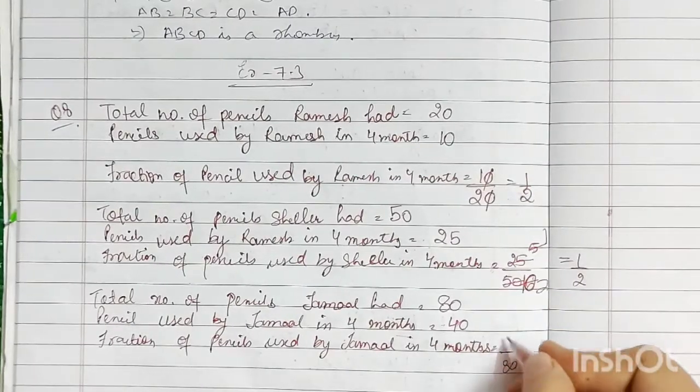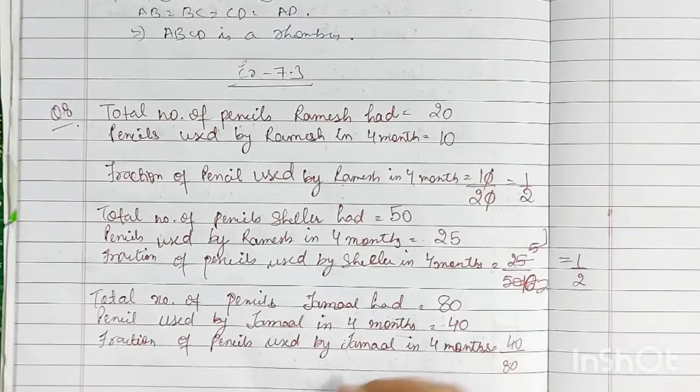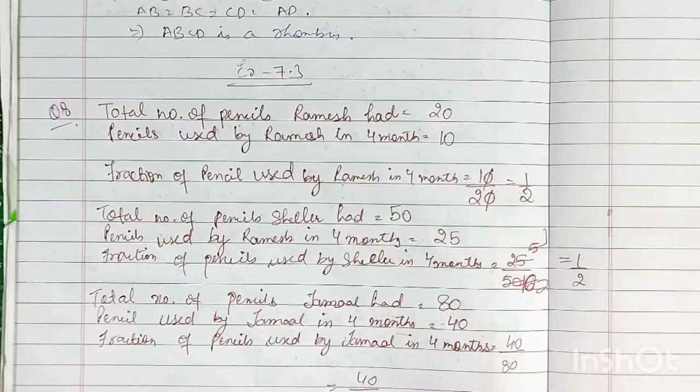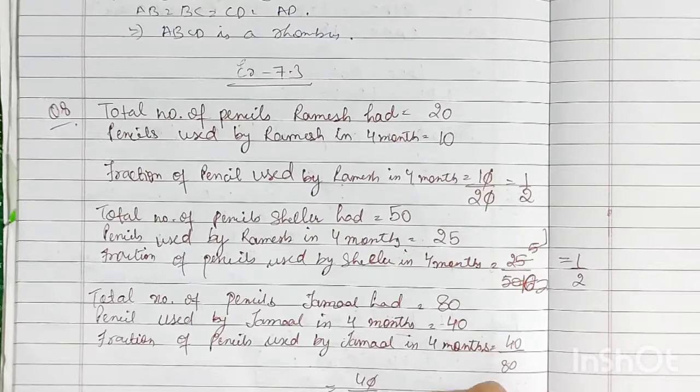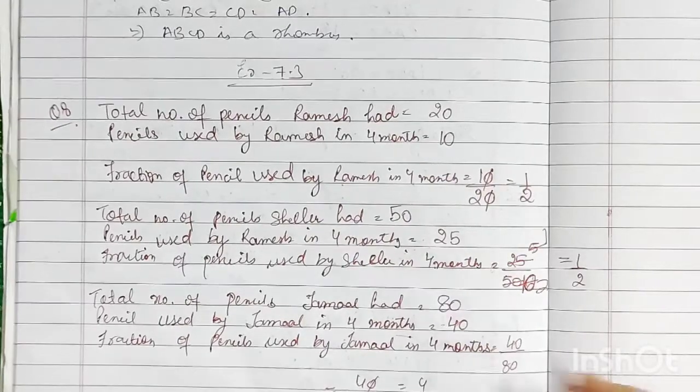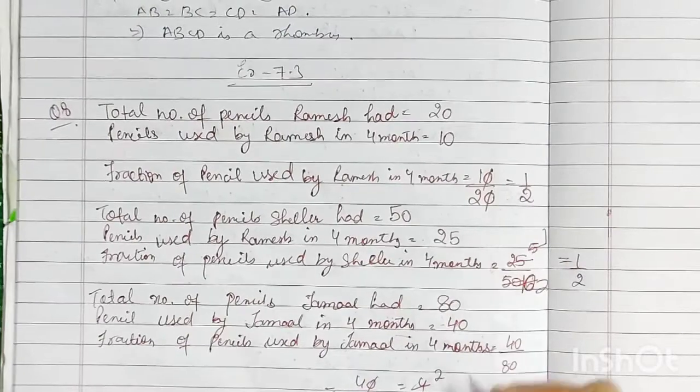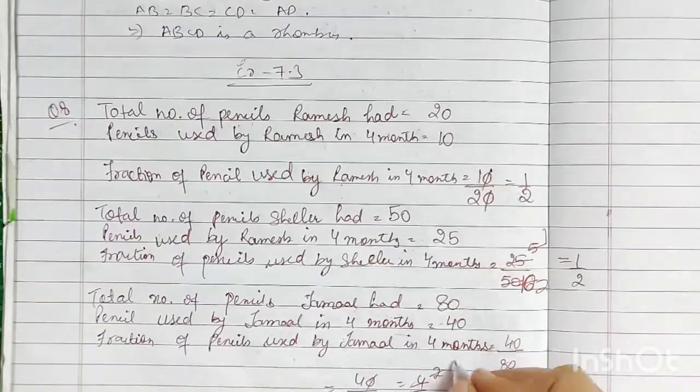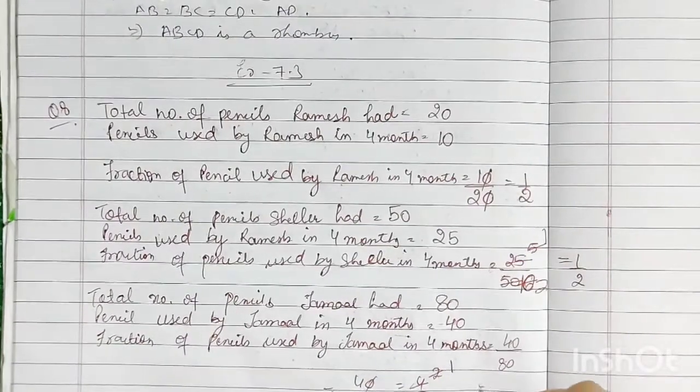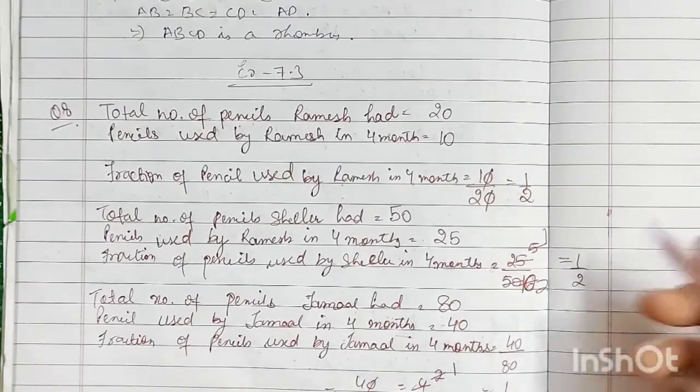For Jamal, this is 40 by 80. Dividing both by 2, we get 20 by 40. Then dividing by 2 again, we get 10 by 20, and again 5 by 10, which simplifies to 1 by 2. Thus, the simplified fraction is 1 by 2.